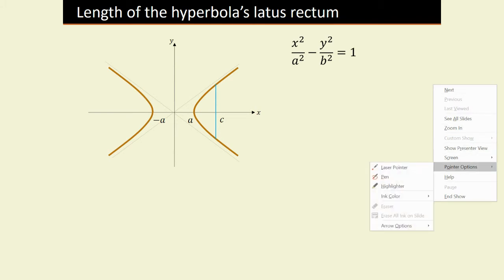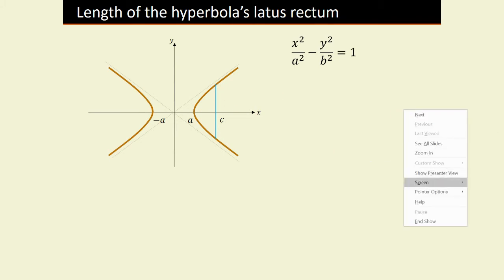On the diagram, we have the latus rectum in blue. Remember, for any conic, the latus rectum is a line that passes through a focus and ends when it hits the conic itself. To get its length, we need to figure out the coordinates of the two endpoints. These two points are completely symmetric about the x-axis, so if we determine one point, we know the other.